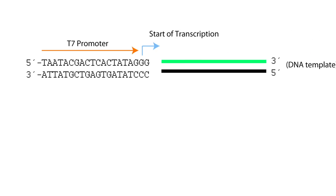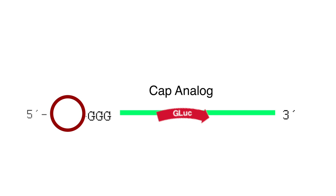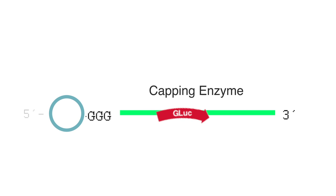This is accomplished by first using T7 high-yield RNA synthesis kit to synthesize both uncapped and capped mRNA transcripts of Gaussia luciferase by in vitro transcription. Two methods of capping the mRNA are demonstrated. One uses a cap analog during transcription, and the other uses the vaccinia capping enzyme for post-transcriptional capping.